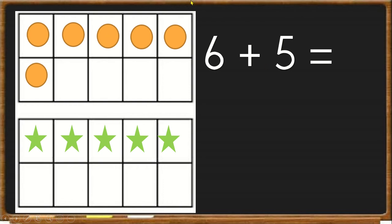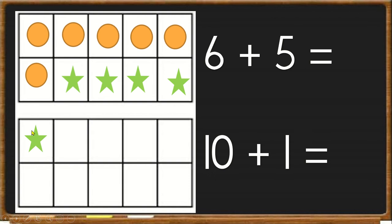We always want to fill up the top 10 frame. So I'm going to take 4 of my 5 counters and put them on my top 10 frame. So 1, 2, 3, 4. Now we have 10, because we know this is a full 10 frame, 10 plus 1. And 10 plus 1 is easy because it's 10, 11. So 10 plus 1 is 11. Therefore, 6 plus 5 is also 11.